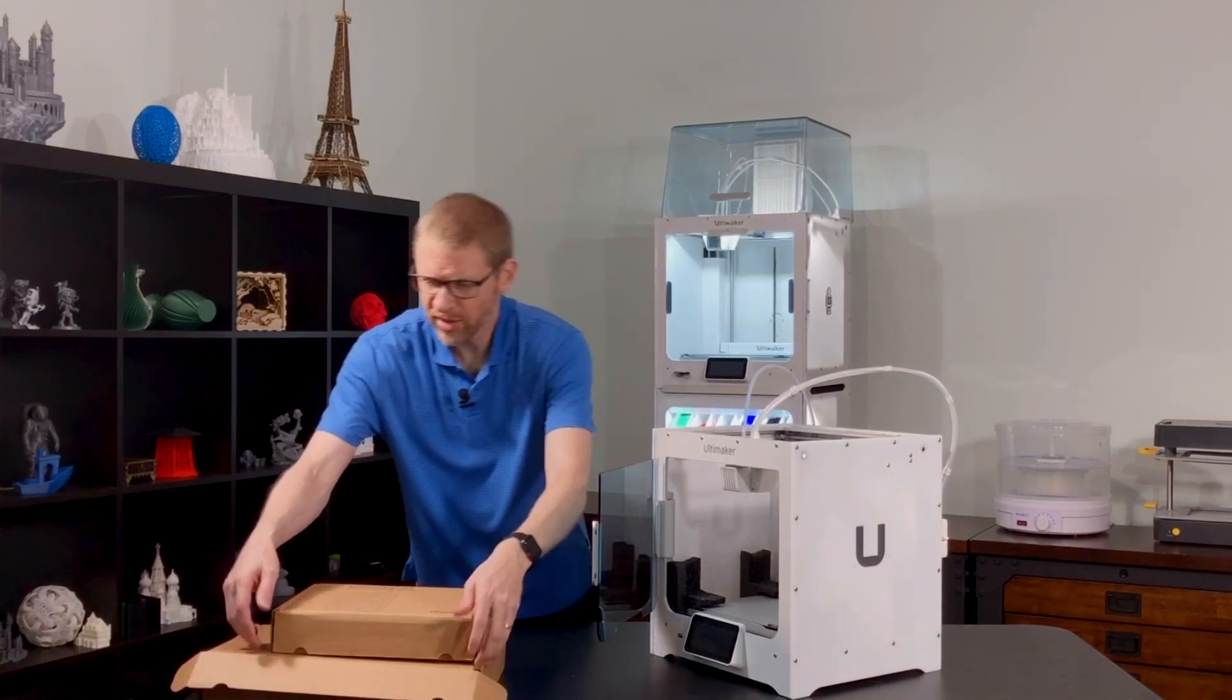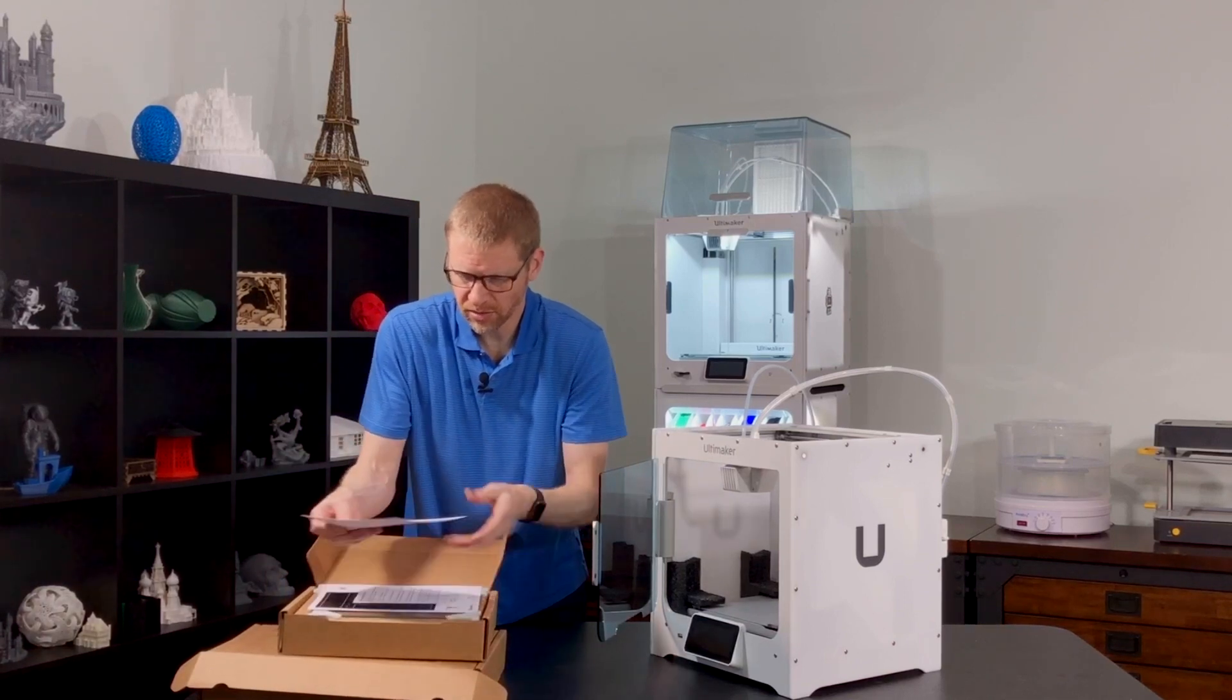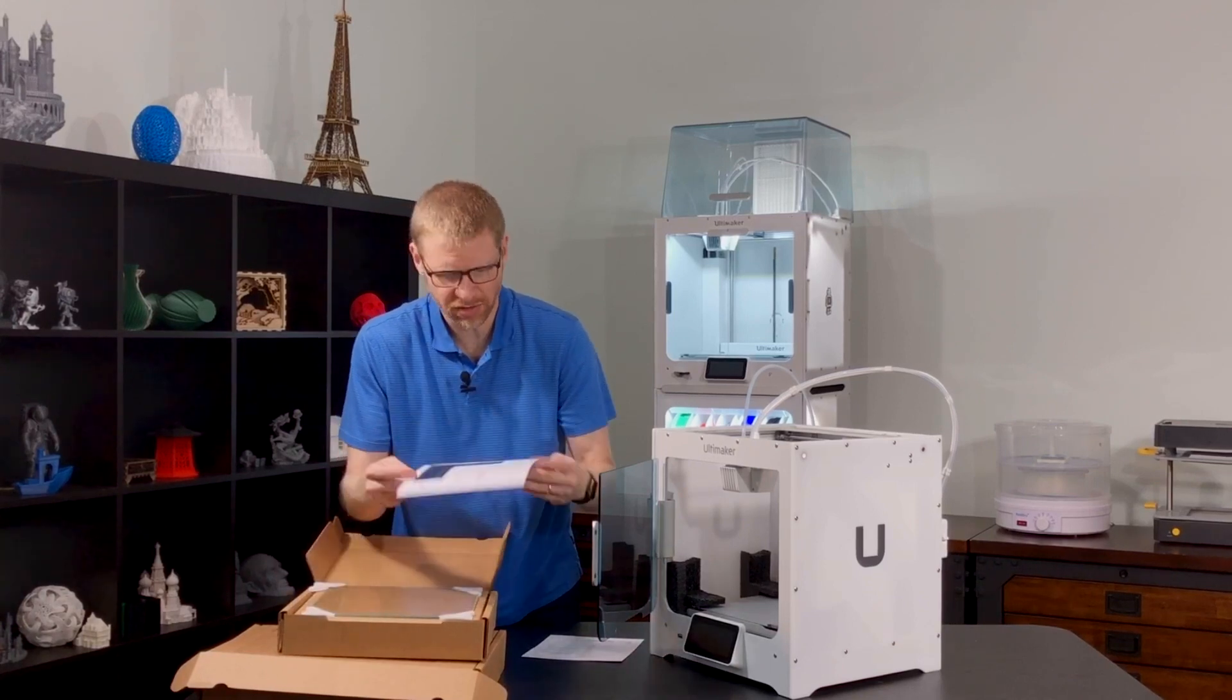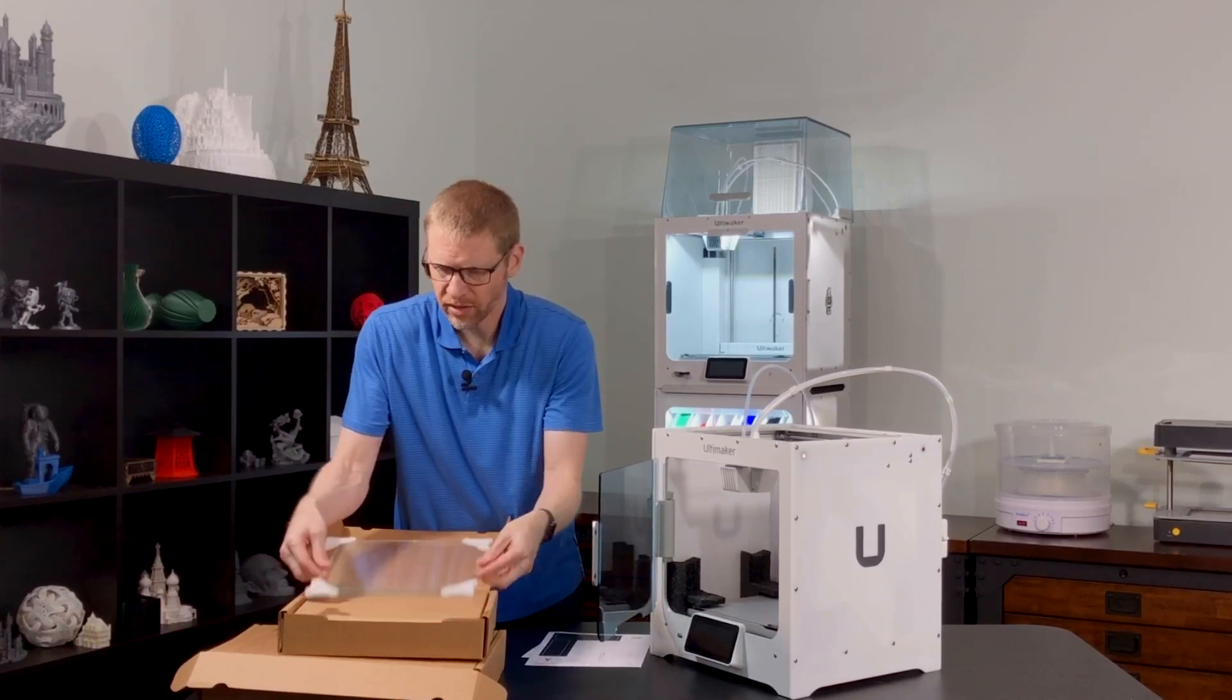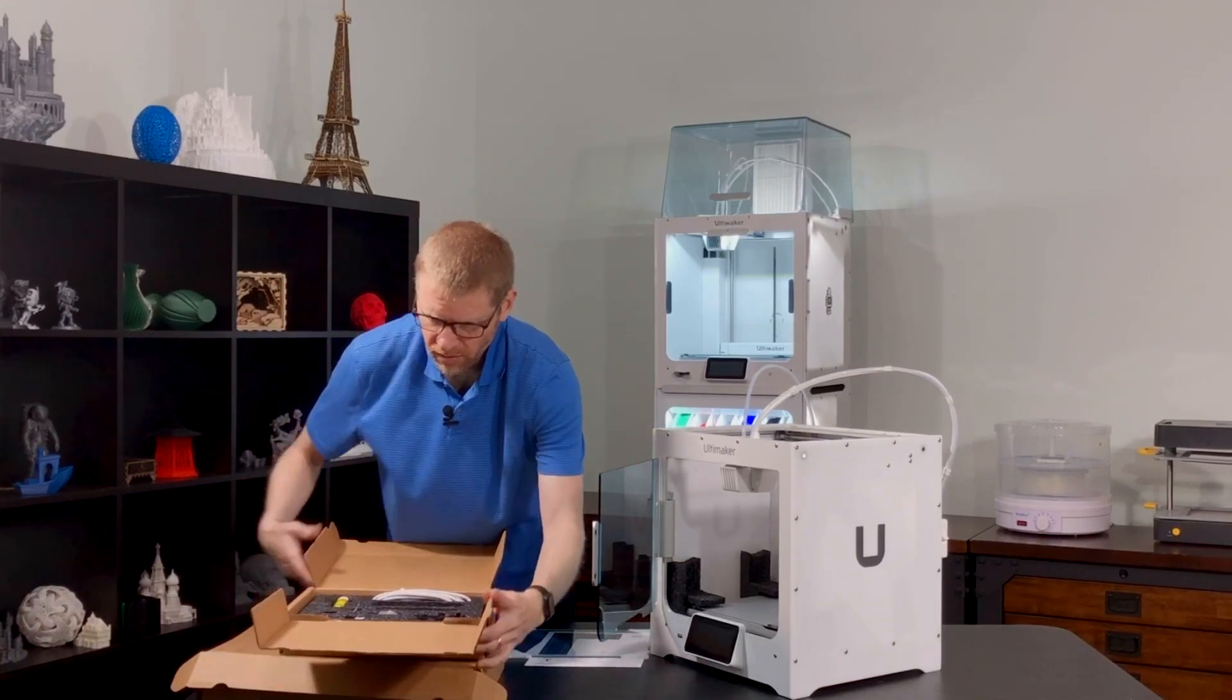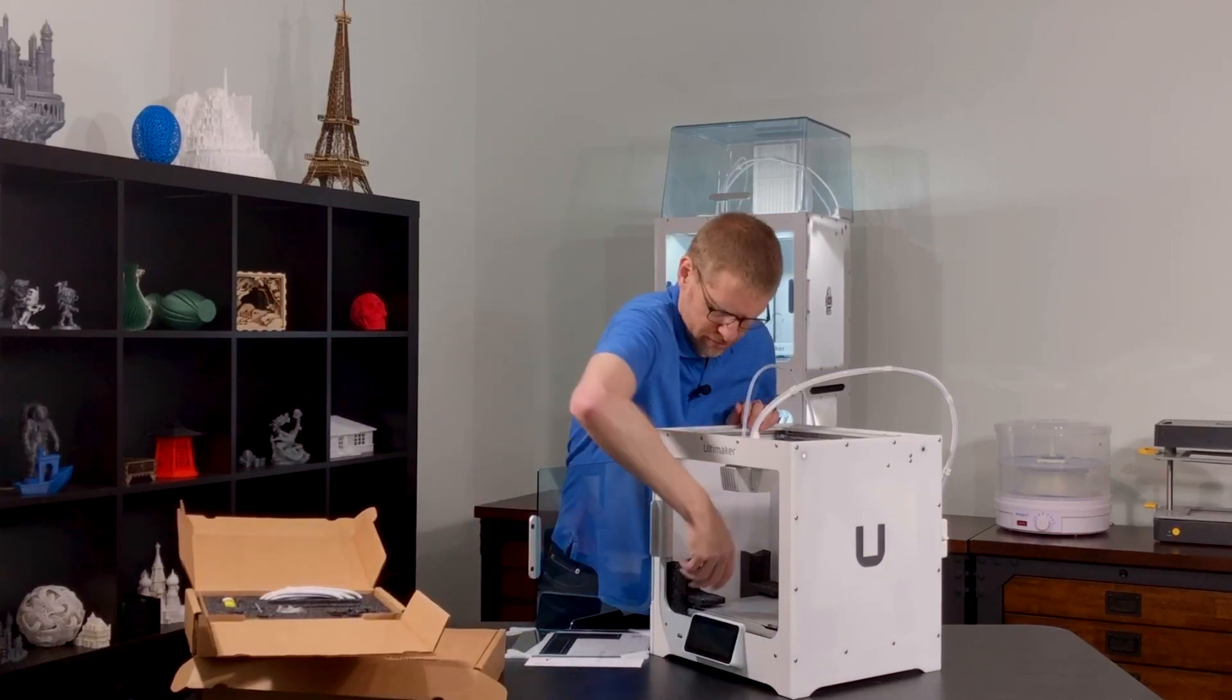Here I have the second accessory box. This has some information about the PVA material. This has our XY calibration sheet and the glass build plate. And then in here we have our other accessories. Let's remove the rest of the foam from here.